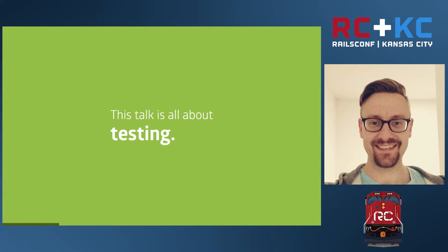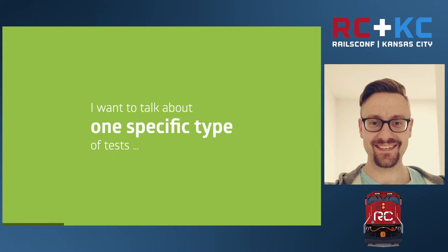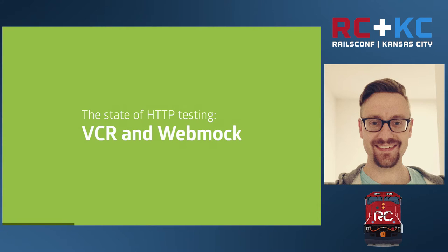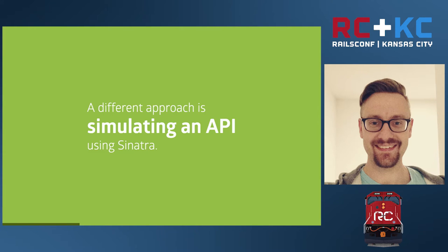At its core, this talk is all about testing — specifically, one type of test: tests that involve HTTP connections. Most of you might know the libraries VCR and WebMock, which are usually used to stub out individual requests, or in the case of VCR, replay requests that have previously been sent to a remote API. I want to present a different approach today and talk about how we can use Sinatra to simulate a foreign API within our test suite.